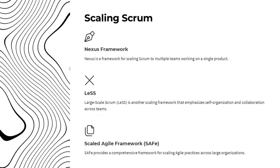Scrum is a popular Agile framework, but it can be challenging to scale to large, multi-team projects. Three frameworks help scale Scrum across multiple teams: Nexus, a lightweight framework that coordinates multiple Scrum teams working on a single product; LeSS, which emphasizes self-organization and collaboration across Scrum teams, scaling Scrum principles to a larger context; and SAFe, which provides a comprehensive framework for scaling Agile practices across large, complex organizations.